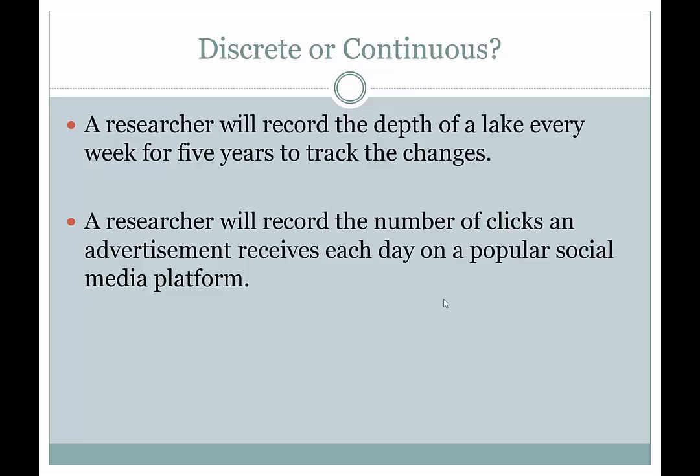So it says a researcher will record the depth of a lake every week for five weeks to track the changes. The resulting measurements that you have or the resulting observations, would they be discrete data or continuous data? Or perhaps neither? Well, I'm going to get rid of the neither option because the depth is certainly going to be a number. And then I want to think about how did they get the number. They didn't count how deep the lake was. They measured it probably with some kind of measuring device, maybe like a really long ruler.